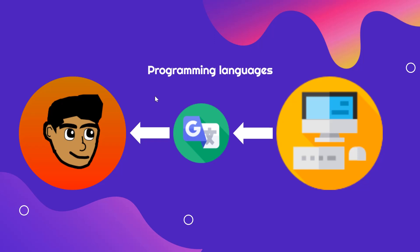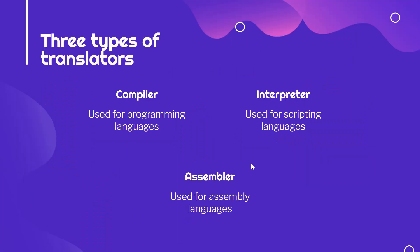This translator should have a name given just how important it is — and that's exactly correct. We don't just call it a translator in programming. There are actually three types of translators with specific names: a compiler, which is used for programming languages; an interpreter, which is used for scripting languages; and an assembler, which is used for assembly languages.